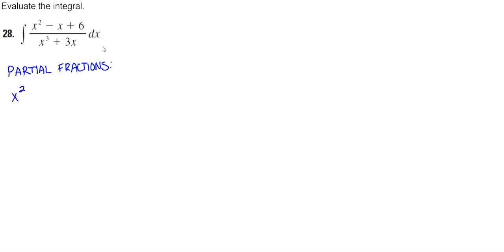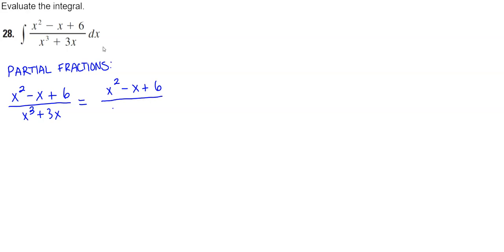We have the function x squared minus x plus 6 divided by x cubed plus 3x. Let's factor the denominator. We can factor out an x, and then what's left is x squared plus 3. We notice that x has been factored out, and x squared plus 3 is irreducible — we have three variable terms in our denominator that we have to account for.